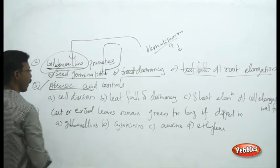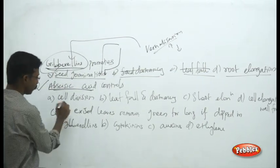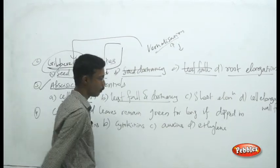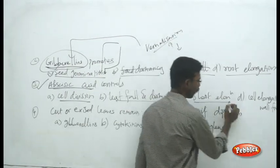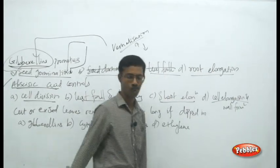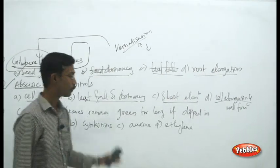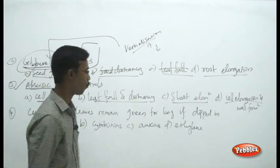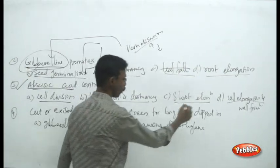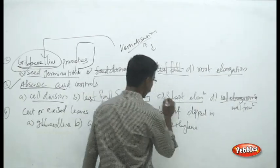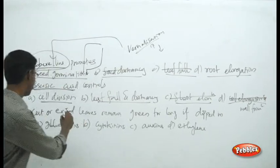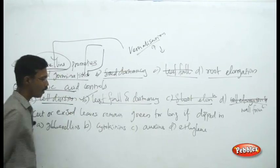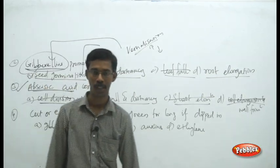The question: abscisic acid controls — choices are cell division, leaf fall and dormancy, shoot elongation, and cell elongation. Abscisic acid is a growth inhibitor hormone, so you can easily eliminate cell elongation, shoot elongation, and cell division. The remaining choice is leaf fall and dormancy.